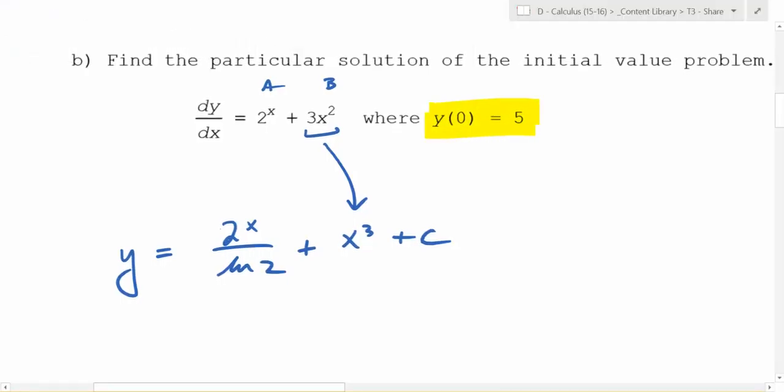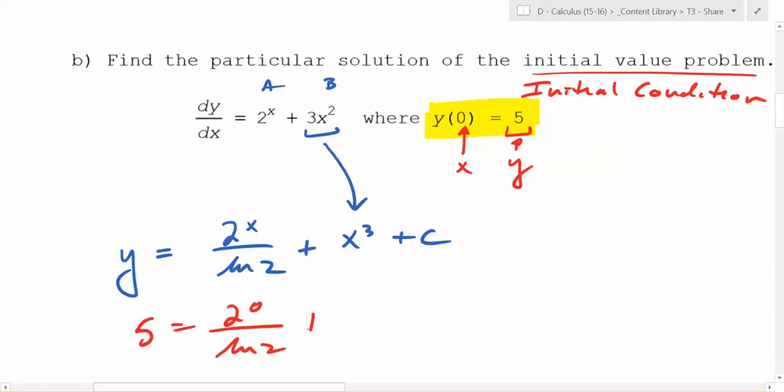So yes, we have y equals this. But what else do they give you? The initial condition. This is important. Initial condition. Really important. By giving an initial condition, it becomes an initial value problem. So you plug 0 in for what? For x. And then 5 for what? Y. So we have 5 is equal to 2 to the 0 over ln(2) plus 0 cubed plus c.